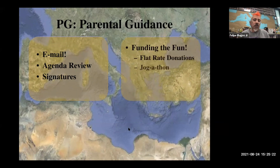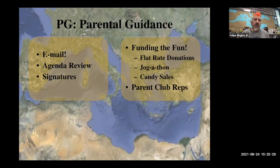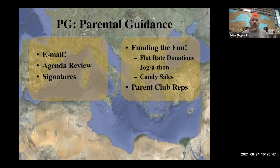You can also help with funding. The flat rate donation is our only means to get to Hearst Castle. For camp, the two big fundraisers are the jogathon — 100% of what they raise goes toward their $275 camp cost — and in January we start a candy sale, which is a 50/50 split to help make up the rest of their camp funds.